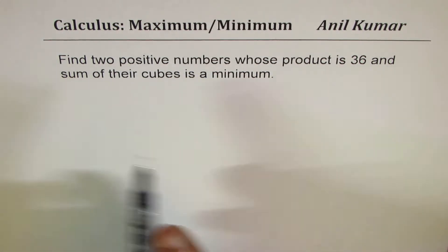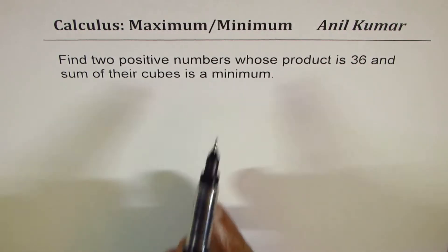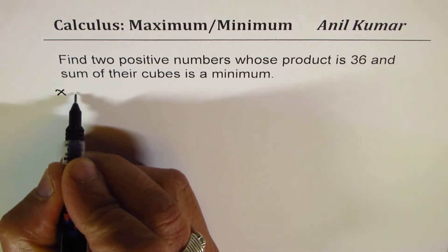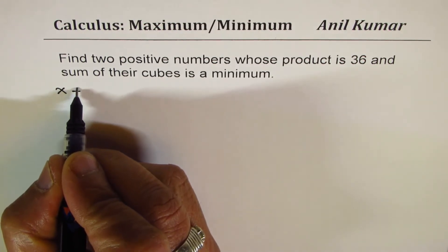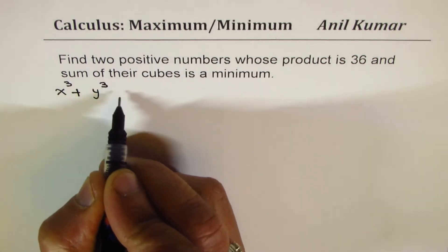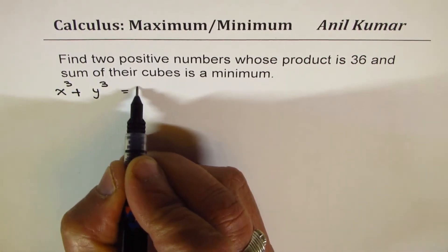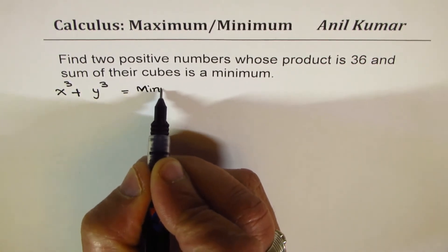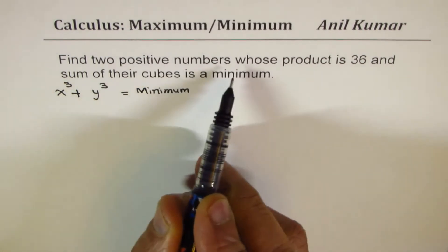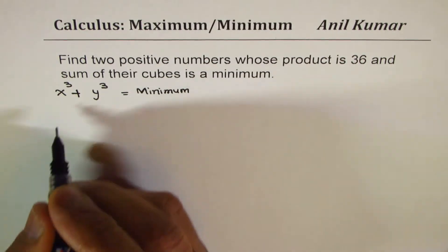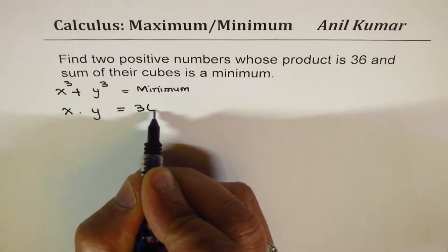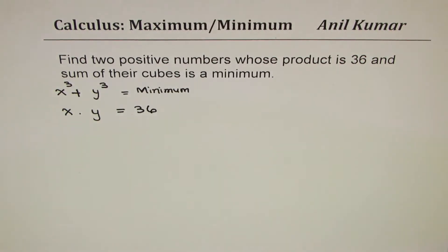So we have to find two positive numbers whose product is 36 and the sum of their cubes is a minimum. Let those numbers be x and y. Then we can say x³ + y³ is minimum, and the second condition we have is that the product of x and y equals 36.